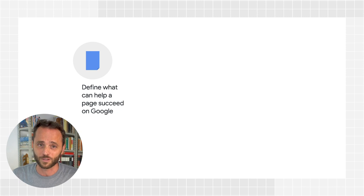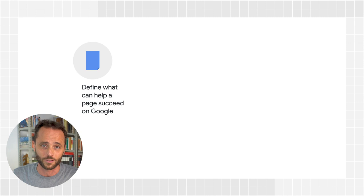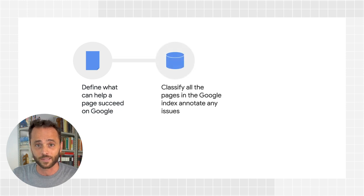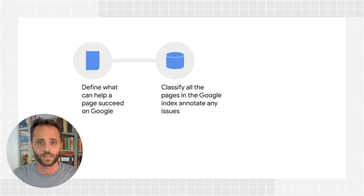Now that we know how the Search Console team is organized, let's talk about how the team develops the reports and tools that you use. The process can be roughly divided into three main steps. The first step is to define what can help a page succeed on Search. We check that Google crawls the pages and gets all the content the site wants to share with us. For topics such as mobile friendliness, Core Web Vitals, or structured data, we define all the signals that can validate their implementation on every page. That leads us to the second step, which is to build a pipeline to go over all the pages in the index periodically and classify them against the signals.